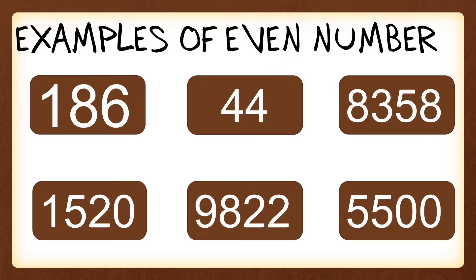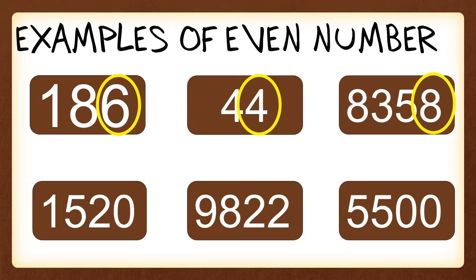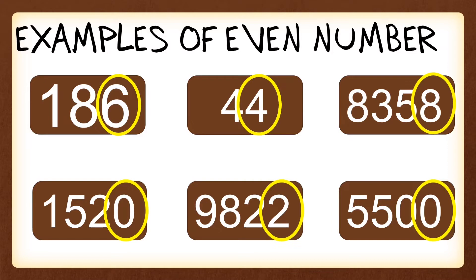First, one hundred eighty-six — the last digit is six. Next, forty-four has a last digit of four. The third one has a last digit of eight. On the fourth number there is a zero on the last digit. On the fifth one there is a two on the last digit. And for the last number there is a zero on the last digit. So as stated in our definition, even numbers end with zero, two, four, six, or eight — and all these examples confirm that.